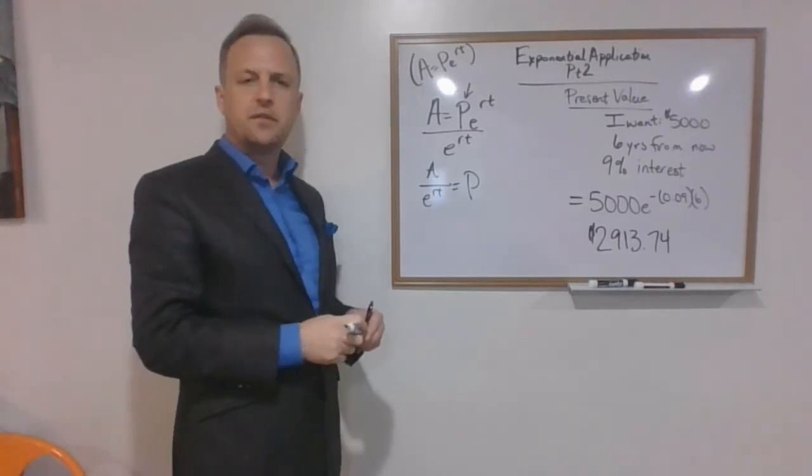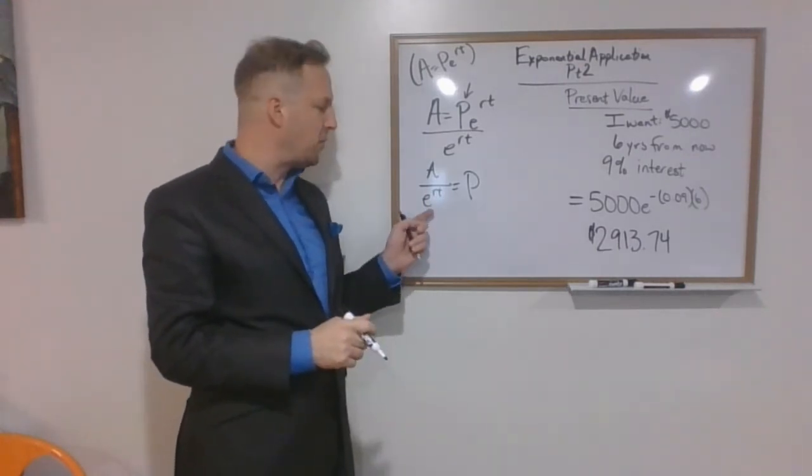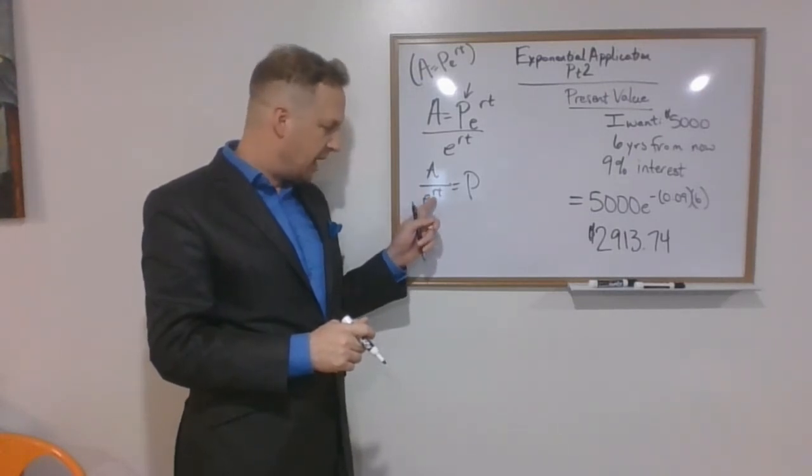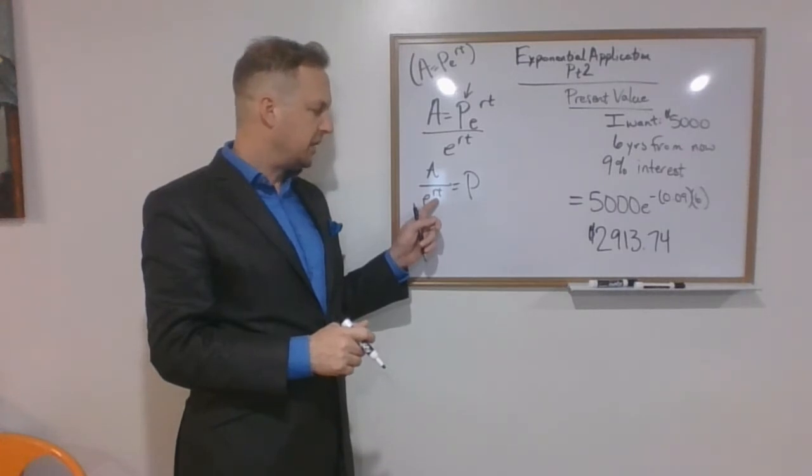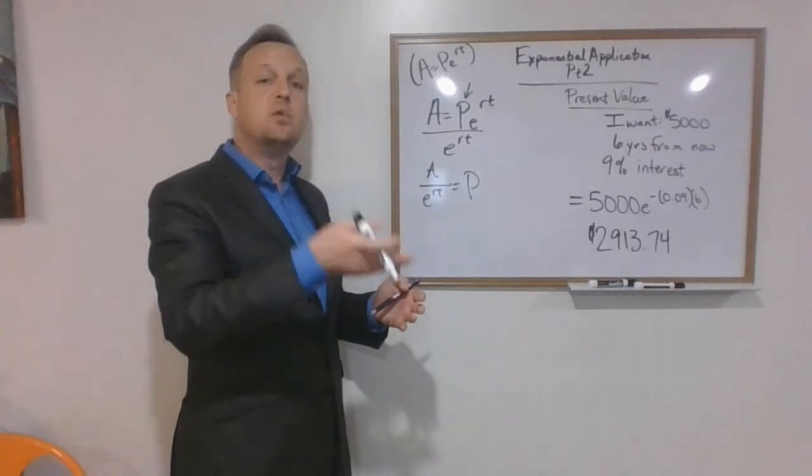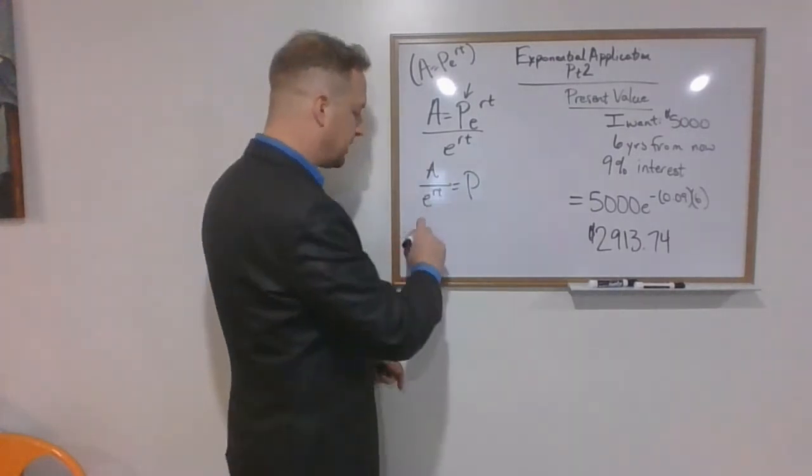Okay, easy enough. But is there an even more elegant or basic way that we can write that? Remember, any exponents on the bottom of a fraction or on the top of the fraction, for that matter, if we change them to negative exponents we can move them to the other side of the fraction. So let's go ahead and do that.